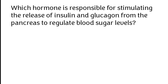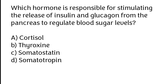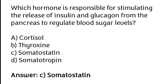Which hormone is responsible for stimulating the release of insulin and glucagon from the pancreas to regulate blood sugar levels? Cortisol, Thyroxine, Somatostatin, Somatotrophin. The correct answer is Option C — Somatostatin hormone is responsible for stimulating the release of insulin and glucagon from the pancreas to regulate blood sugar levels.